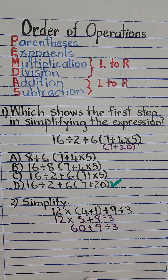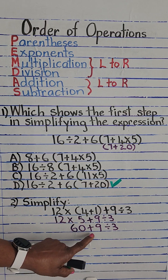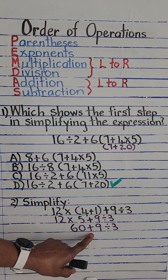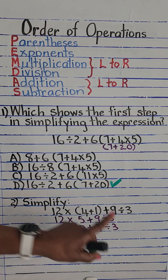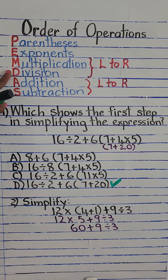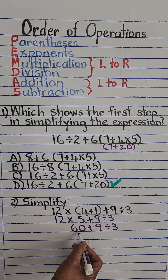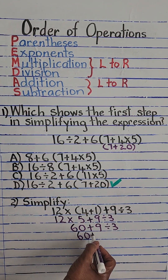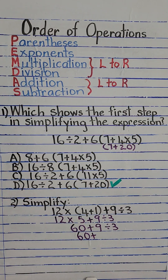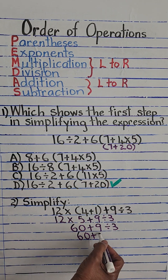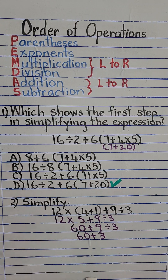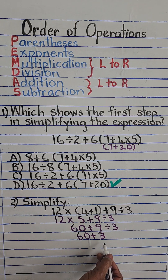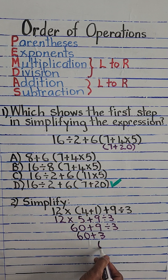Step 3: we still have addition and division. Division comes first, so we put back our 60 and do 9 divided by 3 equals 3, giving us 60 plus 3. Then one more operation: 60 plus 3 equals 63.